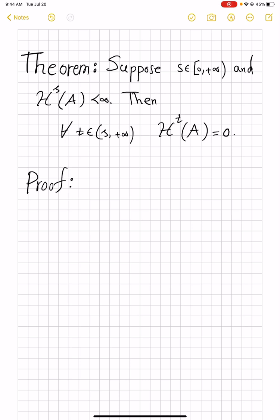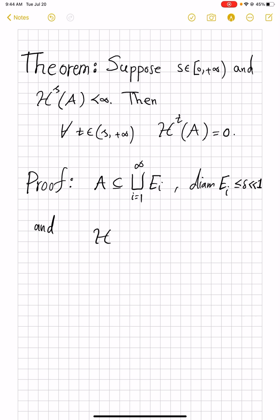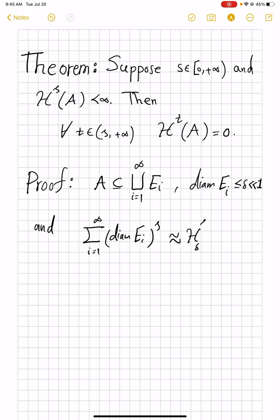The proof is based on the fact that if you have A covered by sets E_i, and the diameters of E_i are less than or equal to delta, which is pretty small, much less than 1, then there are such coverings which estimate H^s(A). That means the summation of diameters of E_i to power s, from i=1 to infinity, is getting pretty close to H^s_delta(A), which is bounded by the assumption.